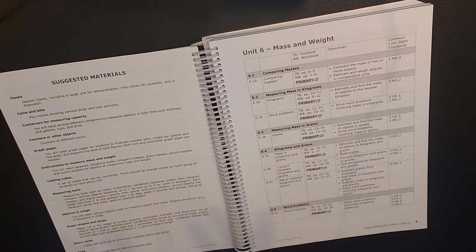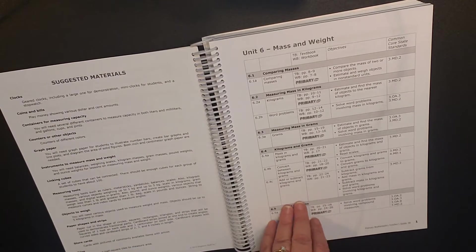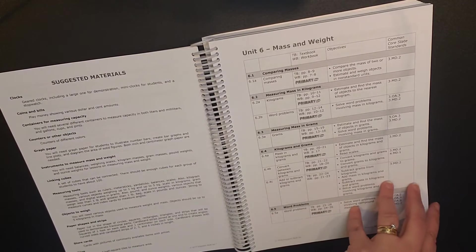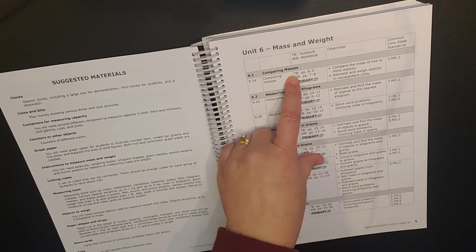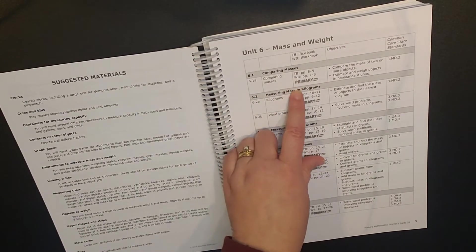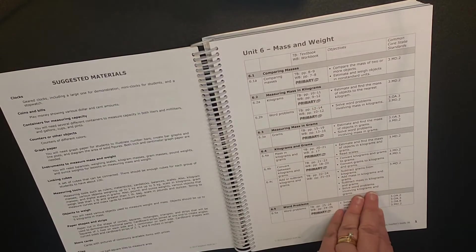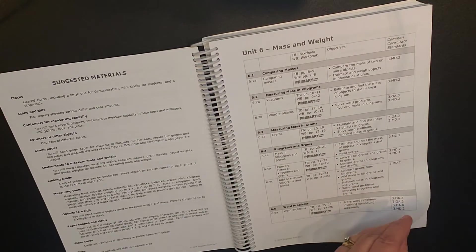So this will tell you how many days they anticipate you spending on each of the different concepts. Then when you get into the suggested material, this is going to be your extra material, like your linking cubes, the objects to weigh, et cetera. So they have this listed for what they are anticipating you utilizing in this 3B section.